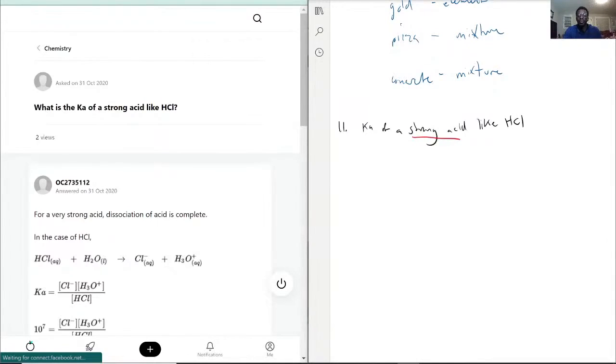If you're dealing with a strong acid, the Ka is greater than one for strong acids. That is what this question is asking. What does that mean regarding HCl?